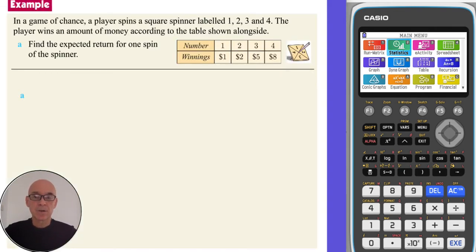In this first question, the player wins the amount of money according to the number spun on the spinner, as shown in the table to the right. And we're asked to calculate the expected return for one spin of the spinner.